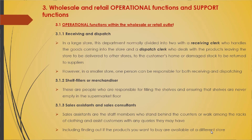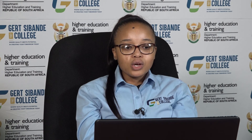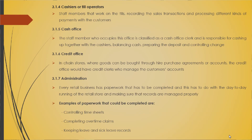The third operational function is sales assistants and sales consultants — staff members who stand behind the counter or walk among clothing racks and assist customers with any queries, including finding out if products are available at a different store. The fourth function is cashiers or till operators, who work on the tills, record sales transactions, and process different kinds of payments. The cash office clerk is responsible for cashing up with cashiers, balancing cash, preparing the deposit, and controlling change.